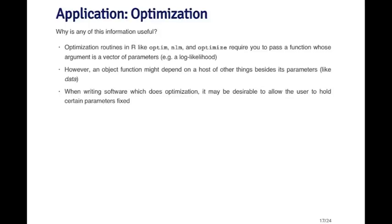In statistics, the objective function that we're trying to minimize or maximize — like a log likelihood — is going to depend on other things besides just the parameters that you're maximizing over. In particular, it's going to depend on things like data. So the question is how do you specify a function that depends on parameters and data and perhaps many other things in a clean way, in a readable programming style, to make it easier for the user to use these types of functions?